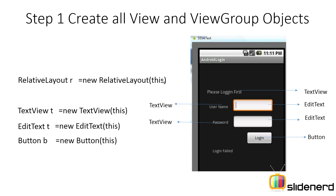What is 'this'? You are required to pass an object of Context. Context is a simple class that allows you to access the system-level services and resources in Android. Every view and view group takes this Context object as a parameter. Now remember, your activity extends the Activity class, and the Activity class itself extends the Context class — that is the reason why you pass 'this'. It is a reference to your class which simply and automatically converts to Context. This is the Java concept where a superclass reference variable can refer to a subclass object.